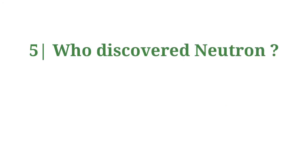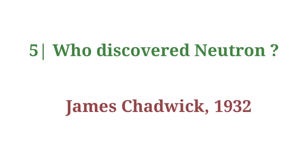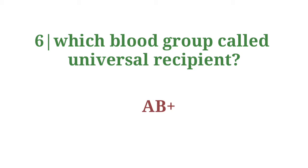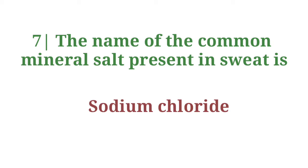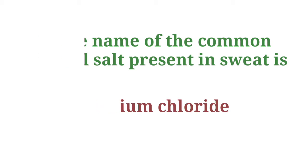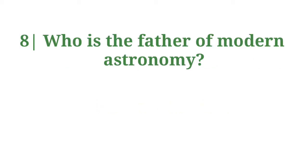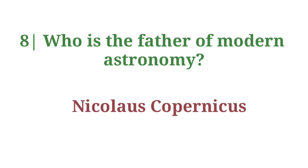Who discovered neutrons? Answer: James Chadwick, in 1932. Which blood group is called the universal recipient? Answer: AB positive. What is the common mineral salt present in sweat? Answer: Sodium chloride. Who is the father of modern astronomy? Answer: Nicholas Copernicus.